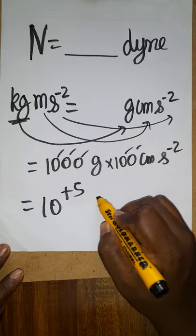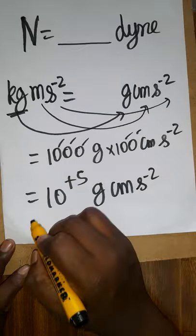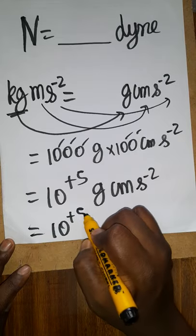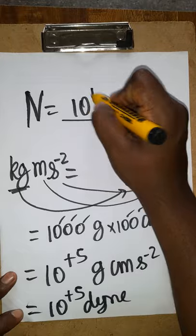10 power plus 5 gram centimeter second minus 2 which is called as the dyne. So, 10 power plus 5 dyne we can call as 1 newton. 1 newton is 10 power plus 5 dyne.